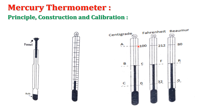For marking the upper fixed point, the thermometer is kept in a special steam chamber called a hypsometer. When water boils in the hypsometer and reaches the temperature of steam at about 100°C, mercury rises slowly and attains a particular level. That level, at about 100°C, is marked as the upper fixed point.